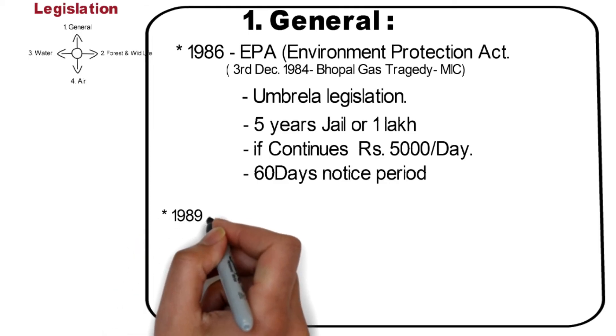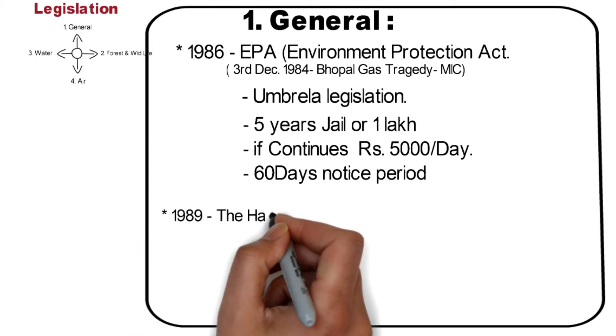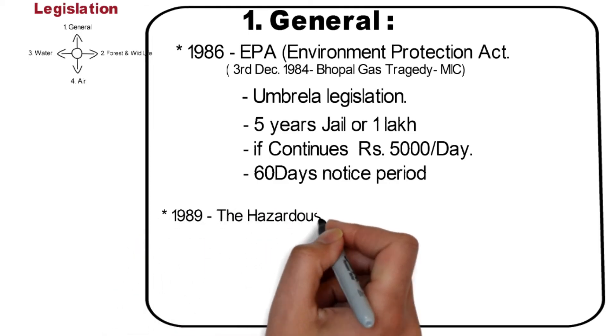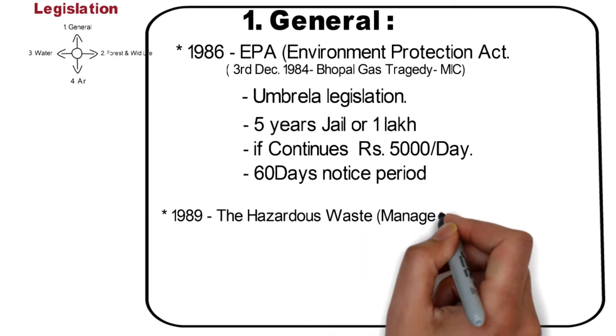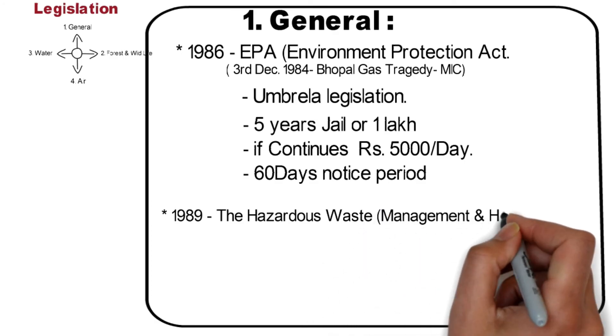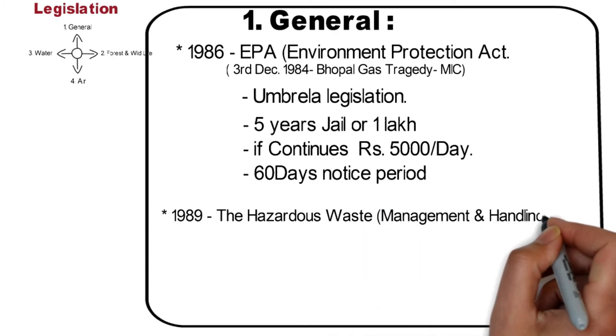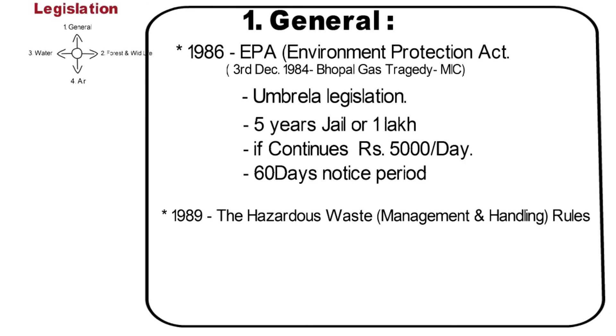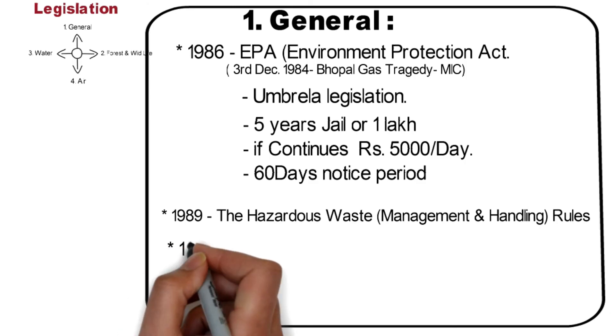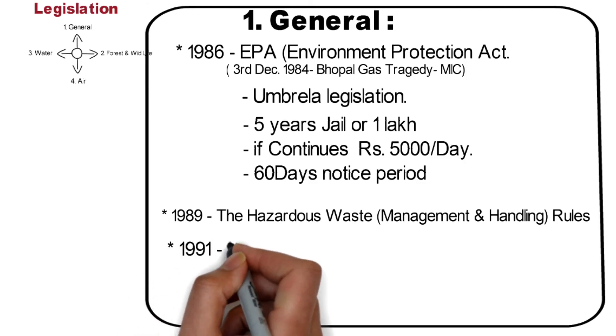Hazardous Waste Management and Handling Rules 1989 — the objective of this rule is to control the generation, collection, treatment, import, storage, and handling of hazardous waste.